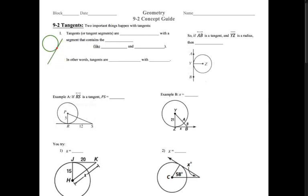Now, there ends up being two important things that happen with tangents, and we'll jump straight into it. The first thing, tangents, or tangent segments, are perpendicular with the segment that contains the center, like radii or diameters, which of course contain the center. So in other words, tangents are perpendicular with radii, is the shortest way of saying that.